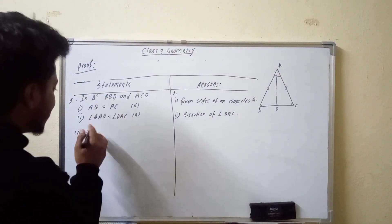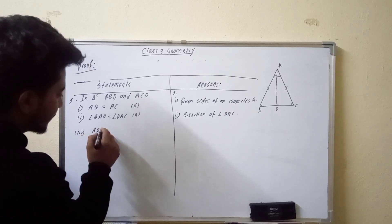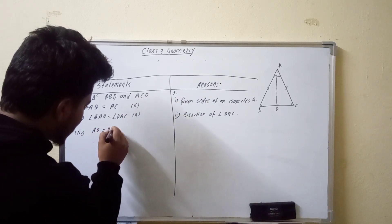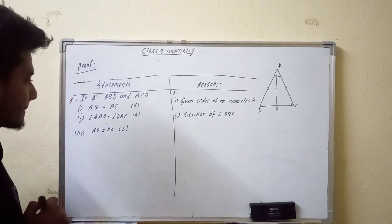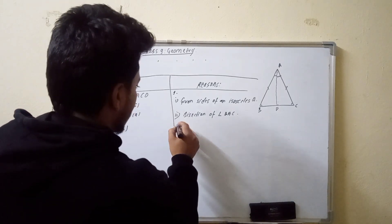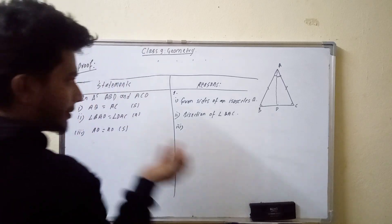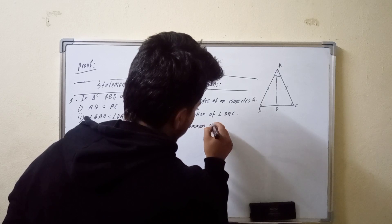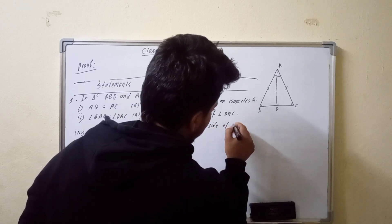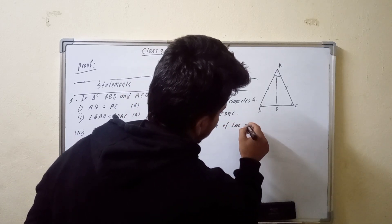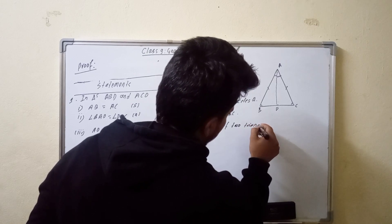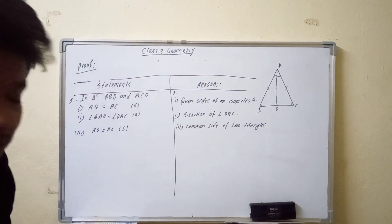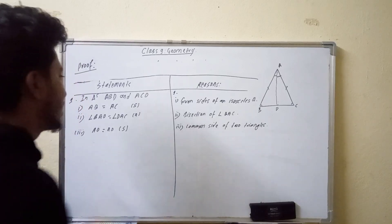Triangle ABD has side AD, and triangle ACD also has side AD. So this is the common side of the two triangles. We have triangle ABD and triangle ACD with common side AD. We have to do this — second number statement.